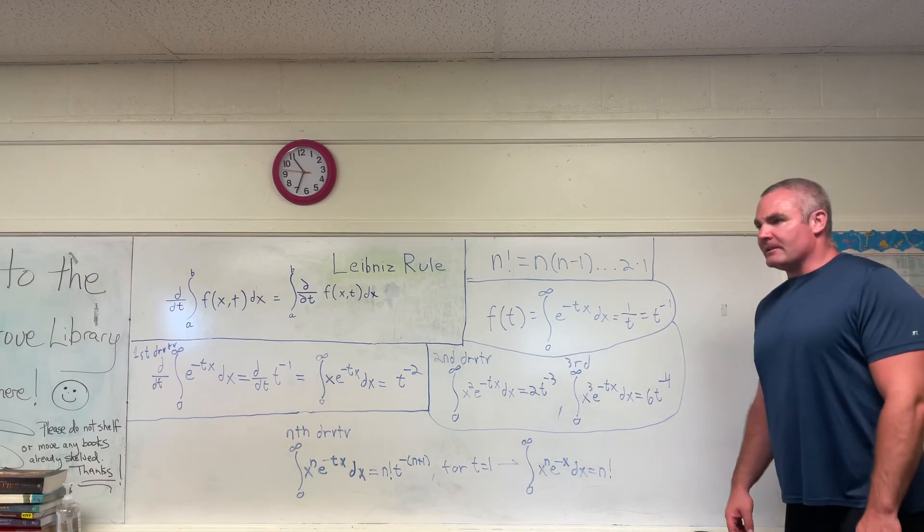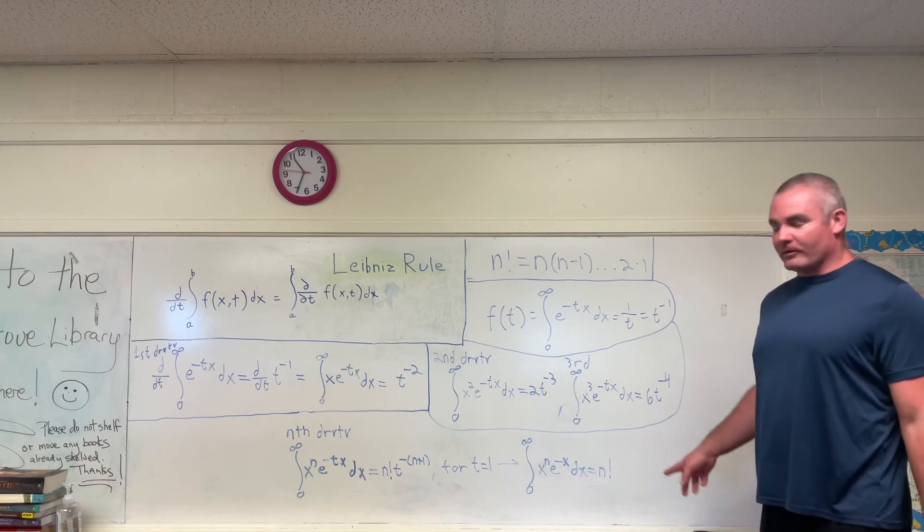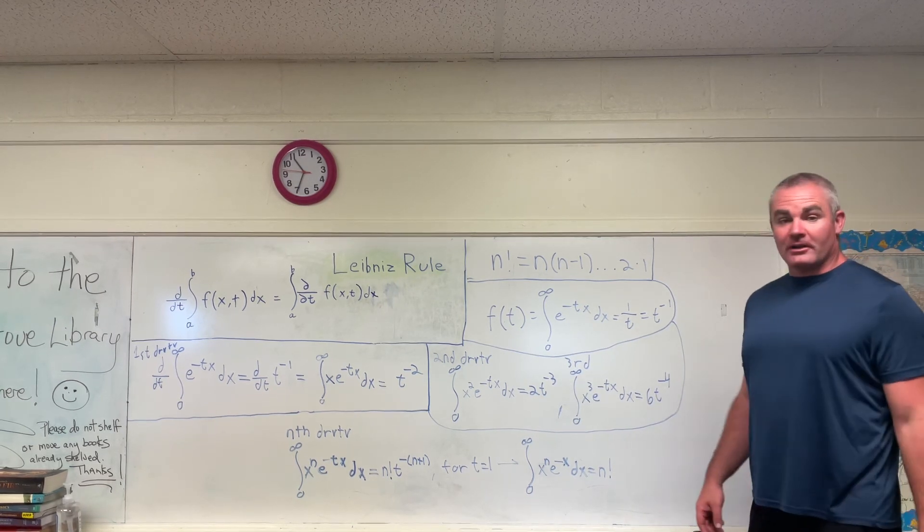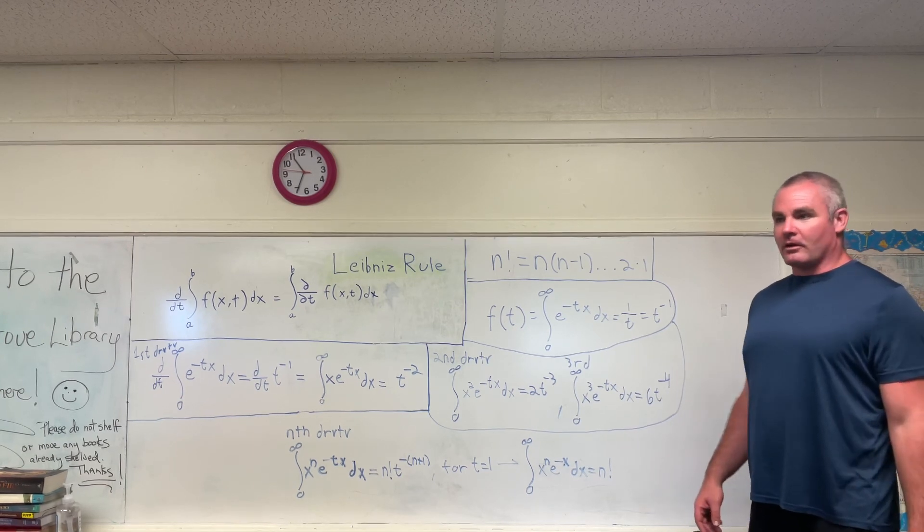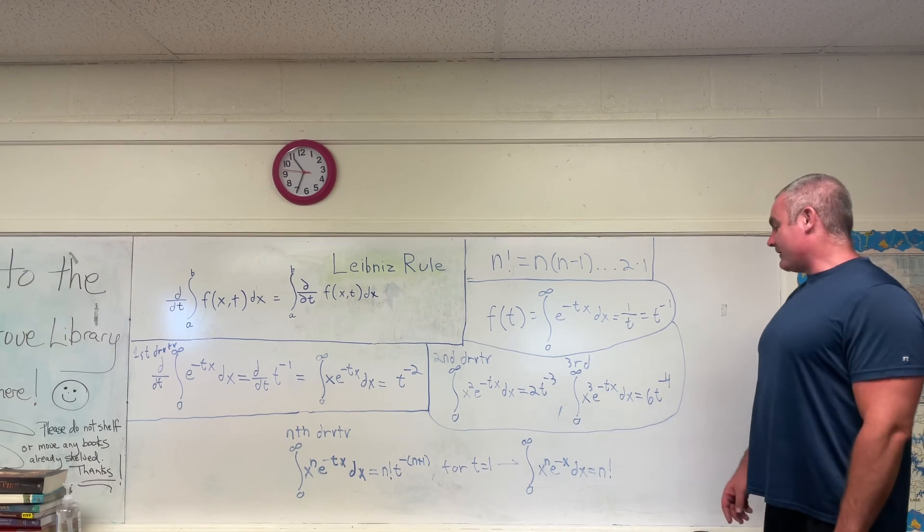And like I said, that's a very messy way of just writing n factorial, but that does allow you to take factorials of fractions, like 1 half or 1 third or 5 fourths or pi factorial, e factorial, things like that.